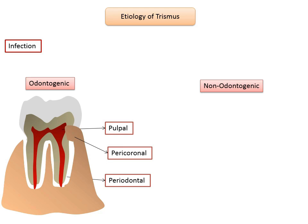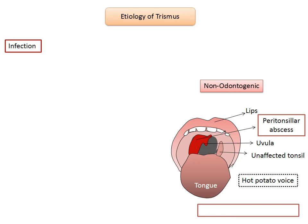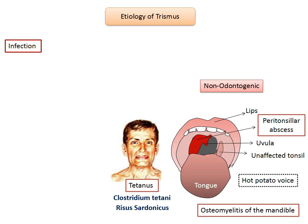Non-odontogenic infections that may cause trismus include tonsillitis or peritonsillar abscess, which commonly affects the speech of the patient, resulting in a hot potato voice. Diseases affecting the mandible, such as osteomyelitis, can also lead to trismus. Tetanus, an infective disease caused by inoculation of Clostridium tetani into the tissues, can lead to trismus. After a short period of non-specific prodromal symptoms, the first manifestation is tonic rigidity of the muscles of mastication.